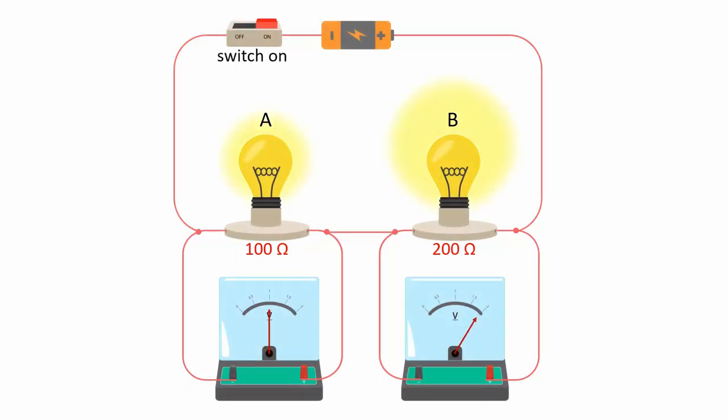Now observe the brightness of the bulbs. Note that bulb B glows brighter than A. Also, the voltmeter across bulb A shows a smaller reading than bulb B.